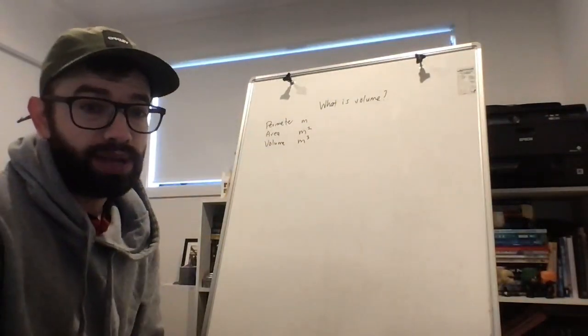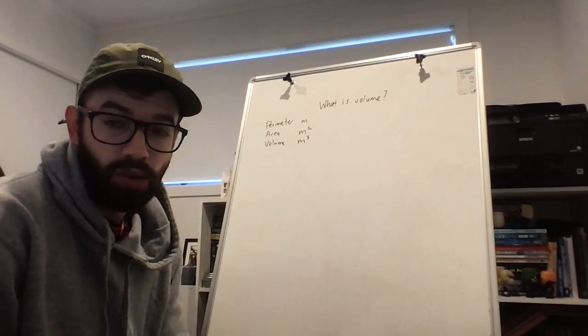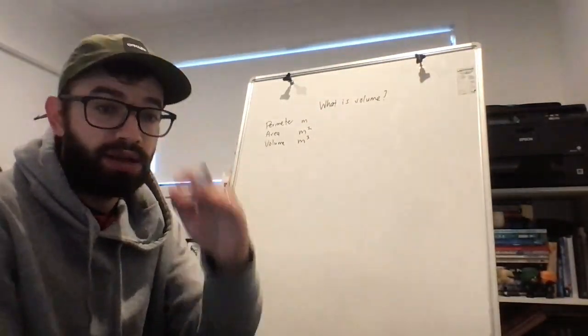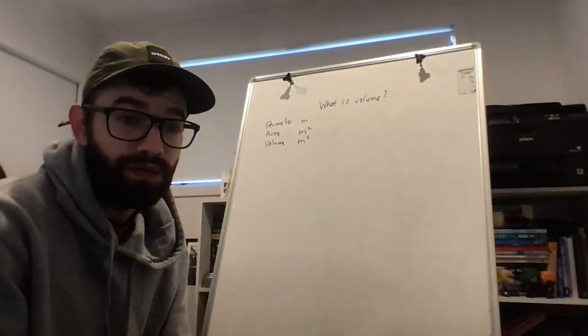And that's talking about the dimensions we're using. If we're thinking about perimeter, we are only looking at one dimension. We're looking at a straight line that may be bent in different places, and the measurement of that line.